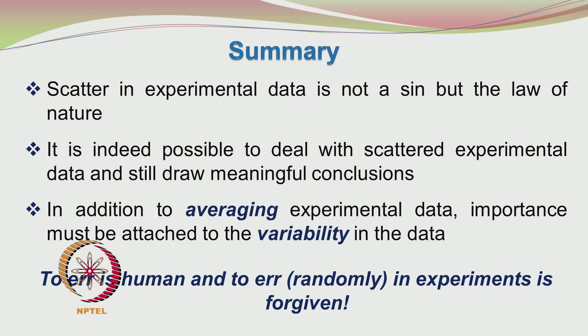To summarize: the scatter in experimental data is not a sin but is the law of nature, and you do not have to be ashamed of scatter in your experimental data. It is indeed possible to deal with scattered experimental data and still draw meaningful conclusions. In addition to averaging, importance must be attached to variability — variability is the main motivation and reason for carrying out statistical analysis. Finally, to err is human, and to err randomly in experiments is forgiven. We will next go to the first topic in our syllabus: random variables.